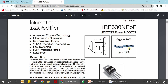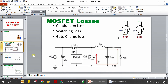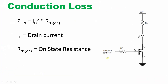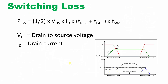Here P = I²·RDS_on: in our application, if the current flowing through is 20 milliamps, then (20mA)² times the RDS_on value is the conduction loss. Moving on to the next loss — the switching loss.